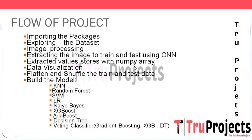The next step is storing extracted values as numpy arrays — pre-processed images and corresponding labels are converted into numpy arrays, which are efficient data structures for numerical computation widely used in machine learning. Data visualization follows, using histograms, bar charts, and images to gain a better understanding of dataset distribution. Before feeding images into the model, they are flattened into one-dimensional arrays and the training and testing data are shuffled to prevent bias during training.